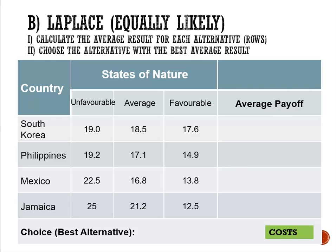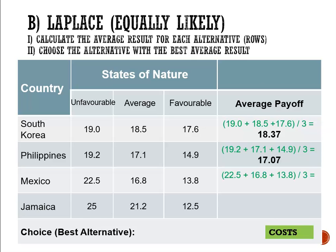Since we have three results for each alternative, we'll be adding and dividing by three. For South Korea: 19 plus 18.5 plus 17.6 divided by three equals 18.37 million. For Philippines, the average works out to 17.07 million. For Mexico, the average works out to 17.7 million, and for Jamaica the average works out to 19.57 million.